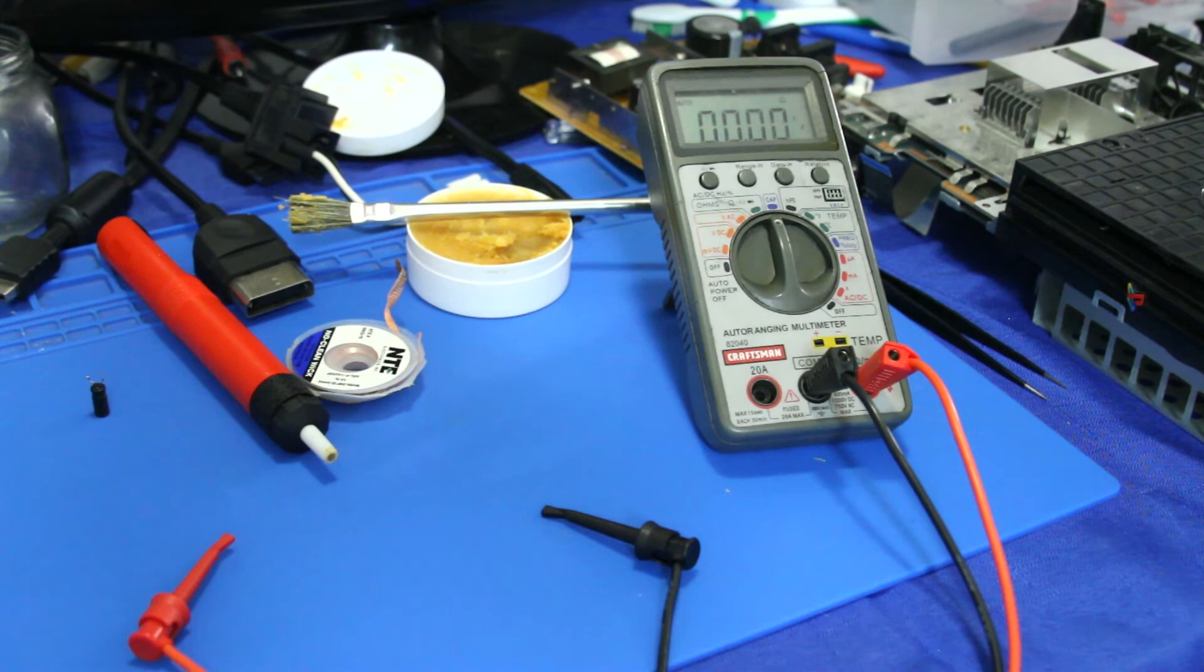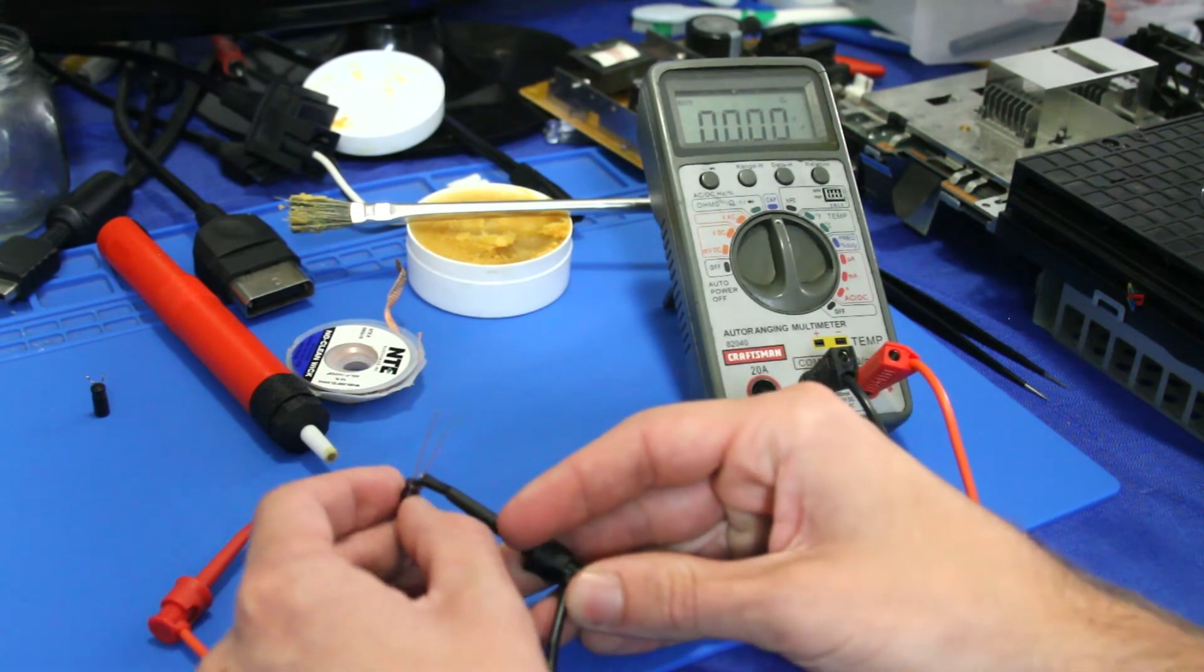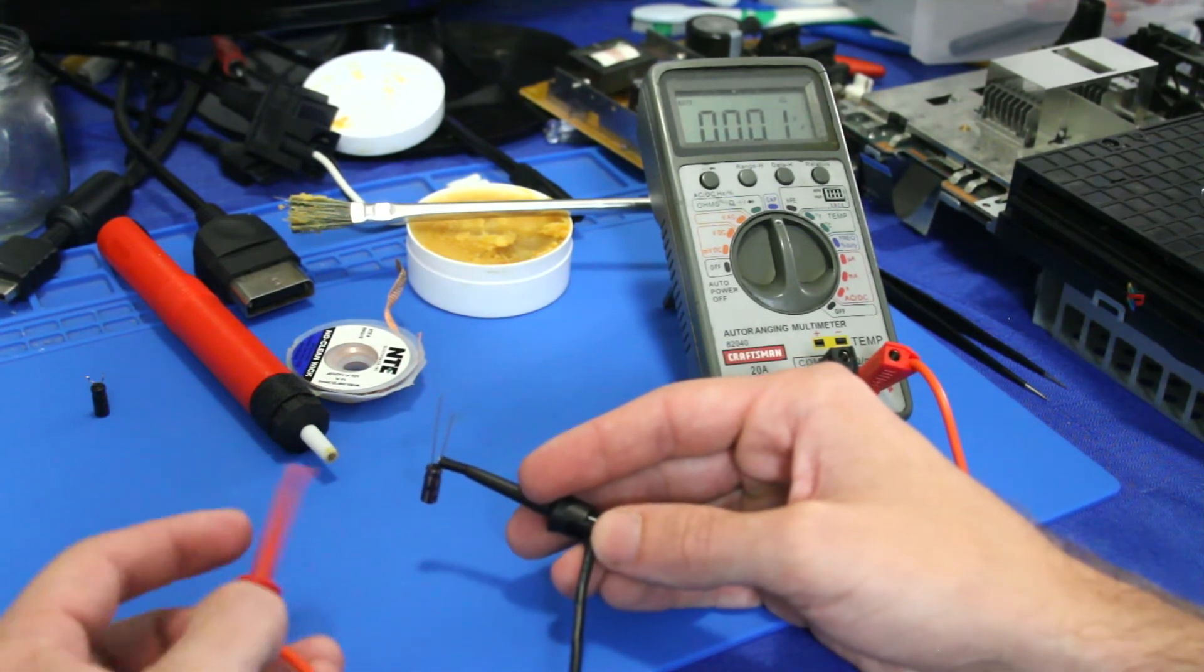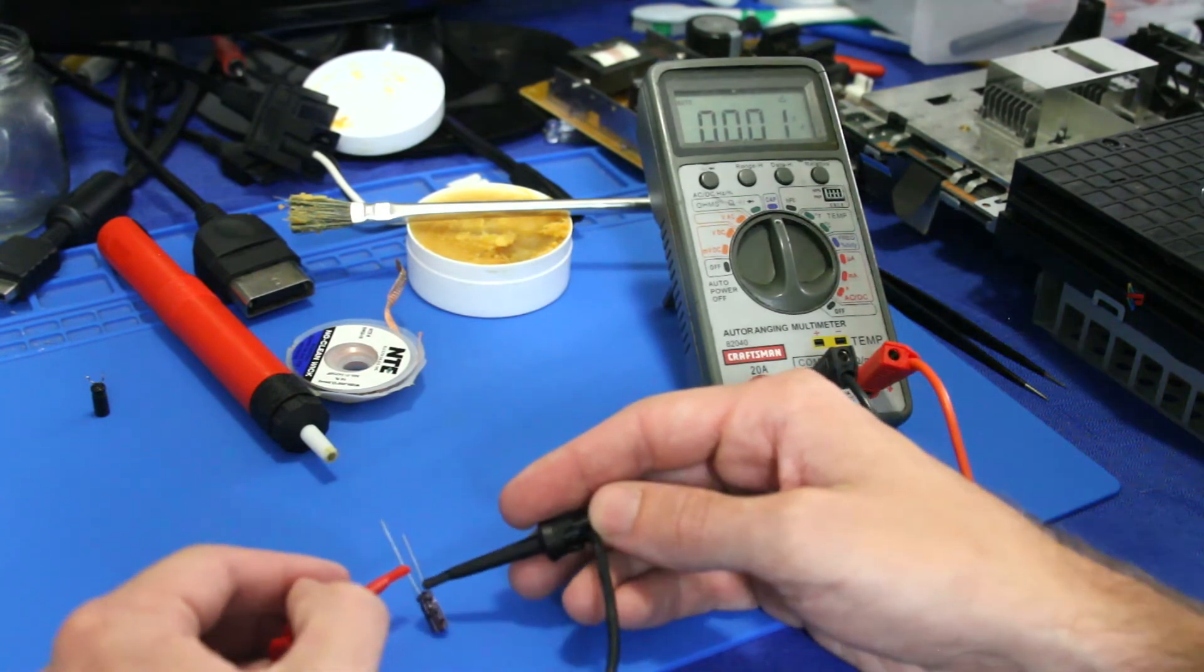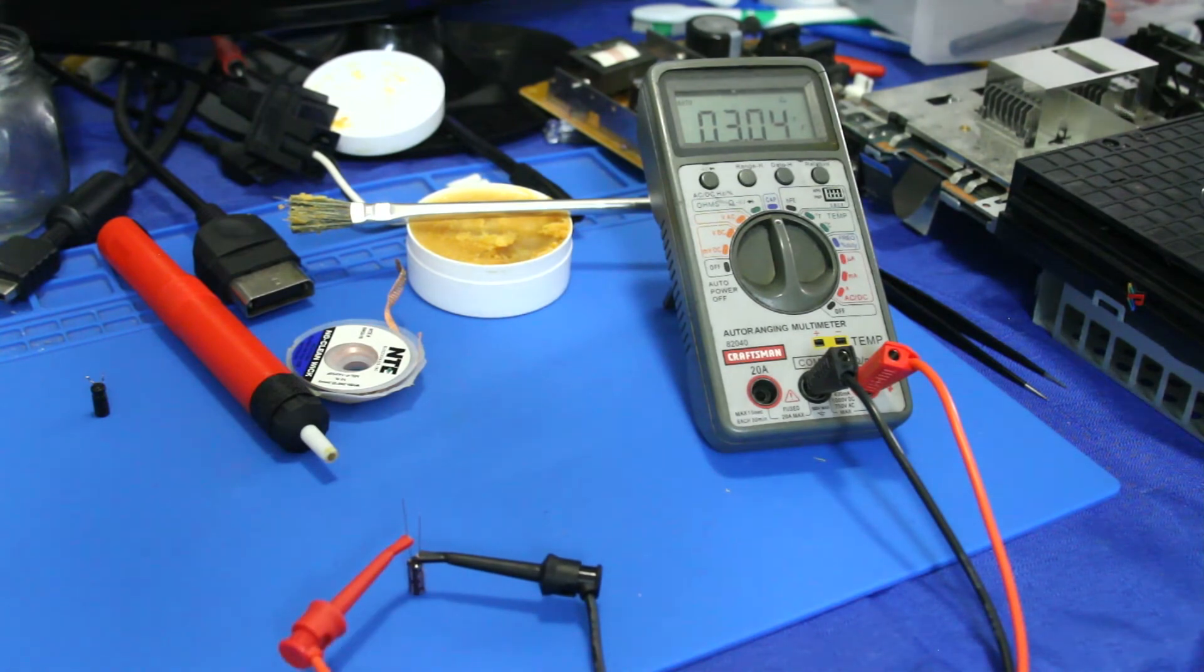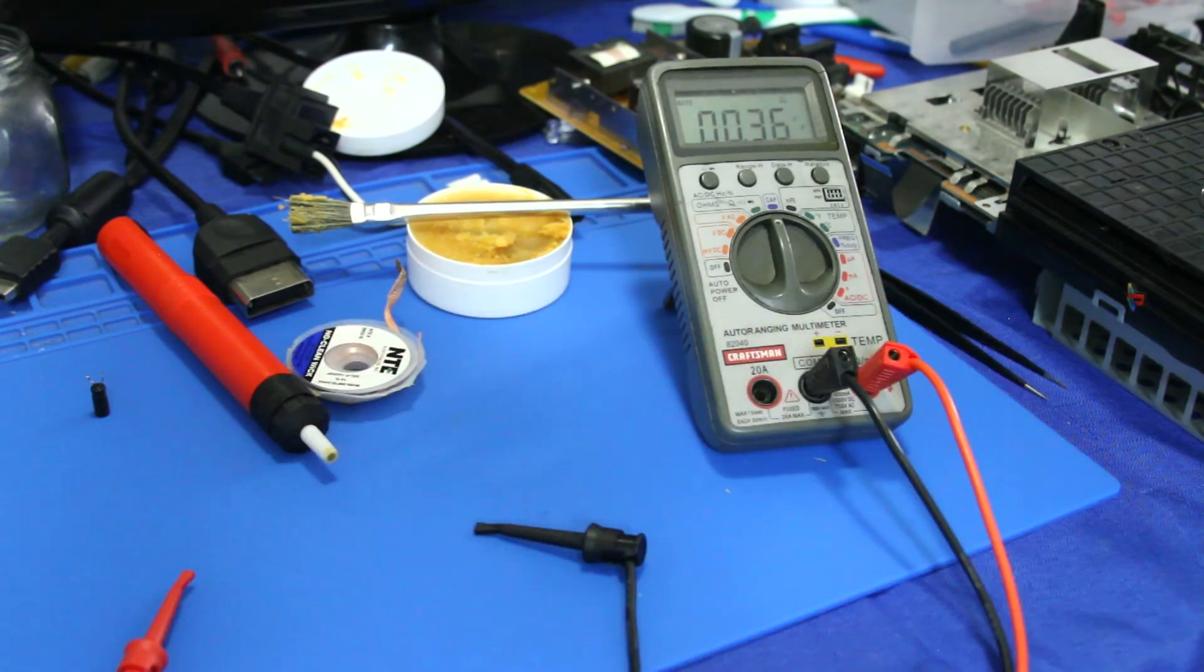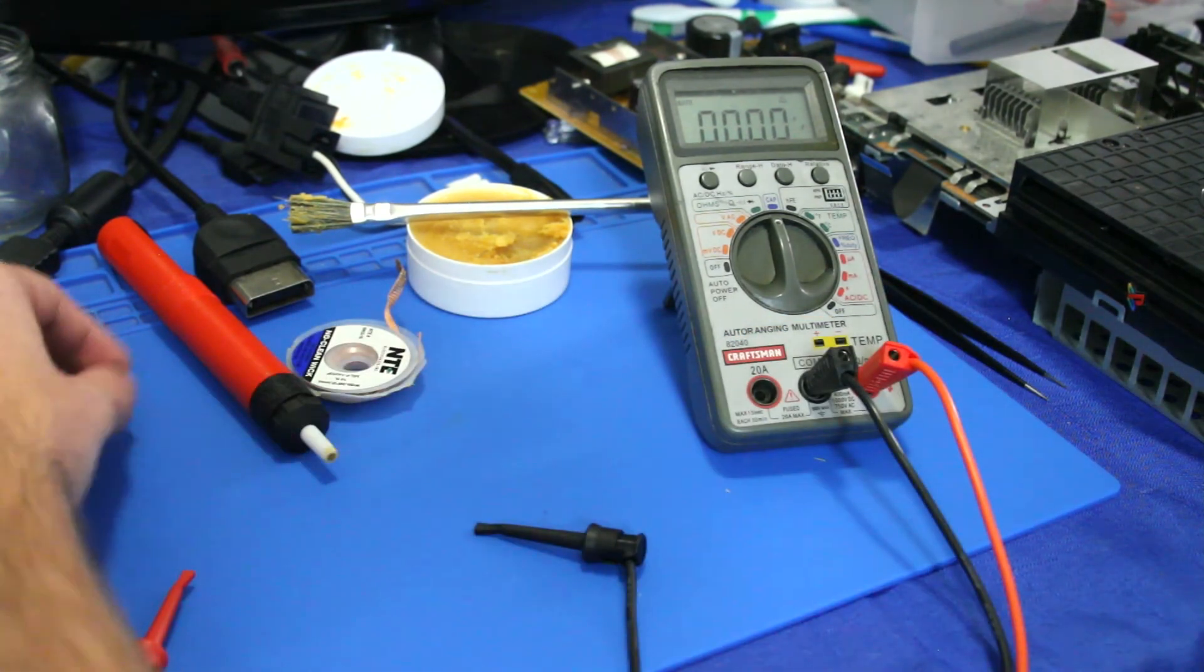Now just to give you a reference point of what a good capacitor looks like, I'm going to grab one out of my little tool bag. This one's brand new, so now watch the multimeter just to kind of see how fast this will read it. We're looking for 33 microfarads on this. So it's at 36, that's within tolerance. So that's a good capacitor. So we I think we have found the fault on this one.